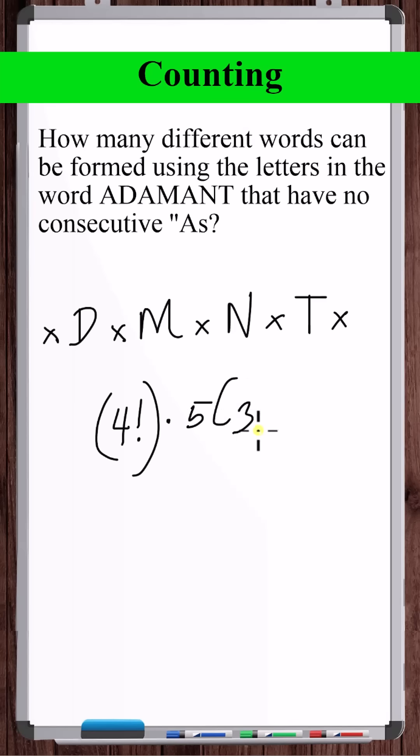And that's the answer because, again, with the product rule, we're pausing on every arrangement of the D, M, N, and T and counting the number of ways we can distribute three A's into these five slots. We do that. We count that for every single different arrangement of the D, M, N, and T.